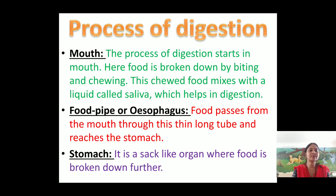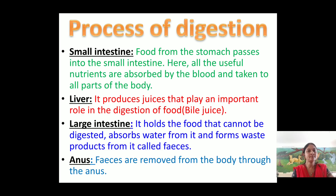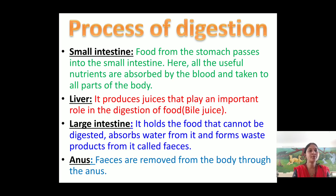In the stomach, which is a sac-like organ, the food is broken down further. The churning of the food takes place in the stomach and a few nutrients are digested there. Then the food passes to the small intestine, where all the useful nutrients are absorbed by the blood and taken to all parts of the body. The liver produces bile juice, which plays an important role in digestion.